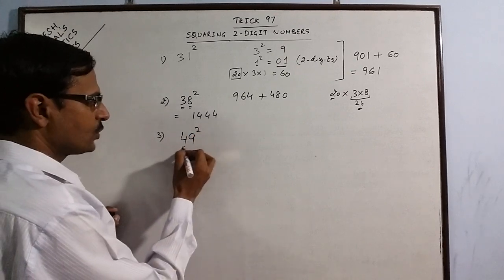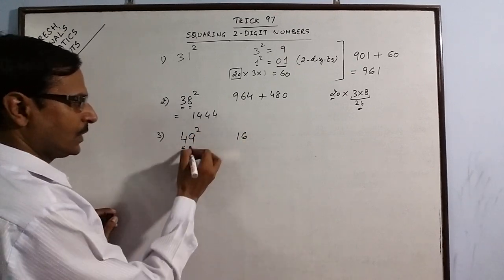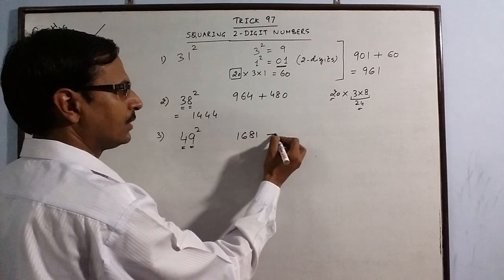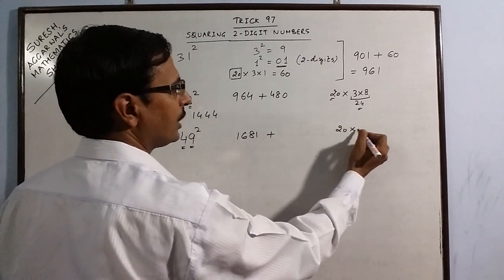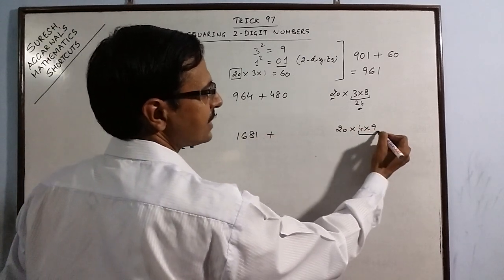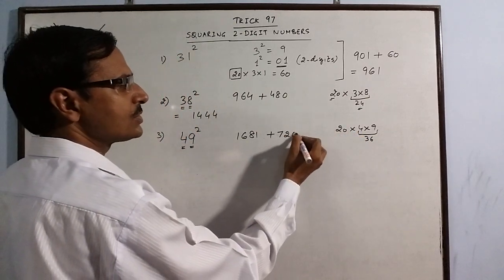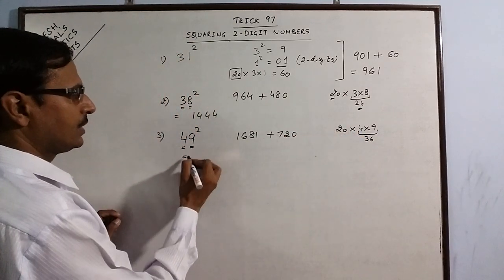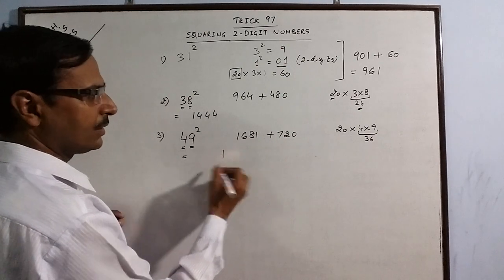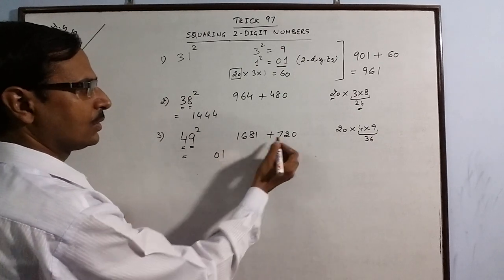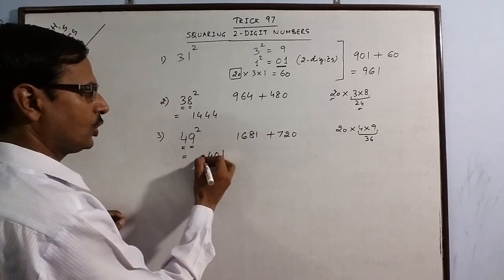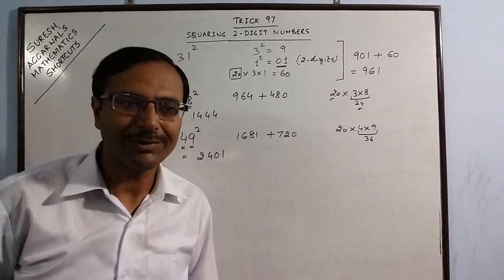Likewise, let us find the square of 49. 4 square is 16, 9 square is 81, 20 times 4 into 9 - this is 36, double of 36 is 72, so add and put a zero. Your answer is 2401, which is the square of 49.